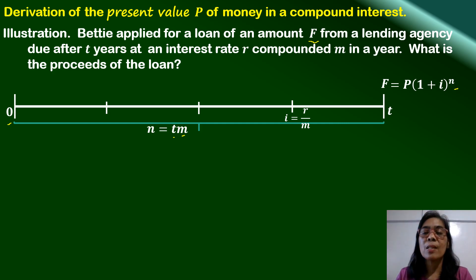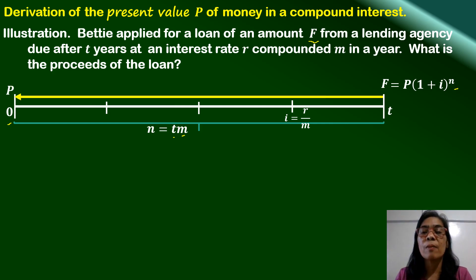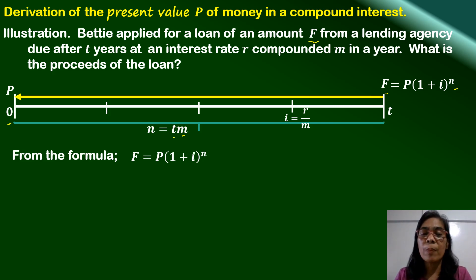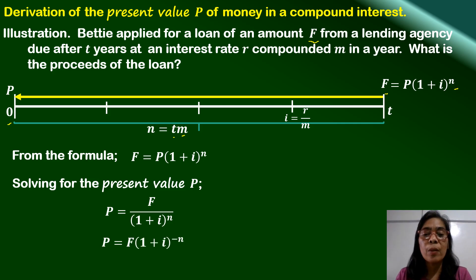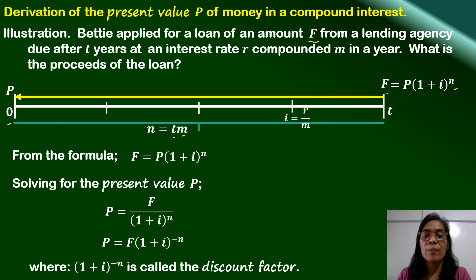With this information, what we're interested in is to determine the present value of F. From the formula, F is equal to P — the future value equals the present value times 1 plus the period rate raised to n. We can now solve for P algebraically. Simplifying the equation, we get P is equal to F over 1 plus i raised to n. Or equivalently, P is equal to F times 1 plus i raised to negative n, where the quantity 1 plus i raised to negative n is also called the discount factor. This is the formula for the present value of money whose future amount after n periods is F.